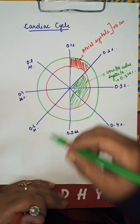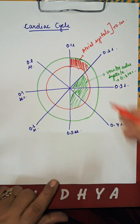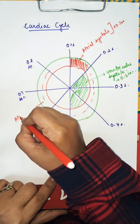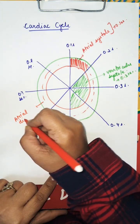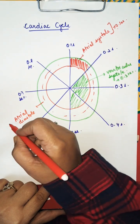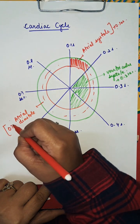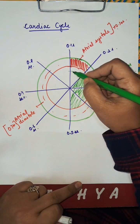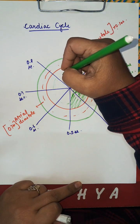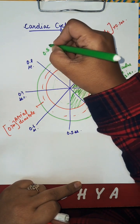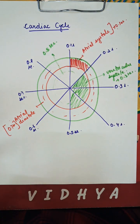The rest of it is atrial diastole — this whole part is atrial diastole, and the left part is 0.7 second. The remaining part is ventricular diastole, which becomes 0.5 second. And here we have completed our cardiac cycle. Thank you.